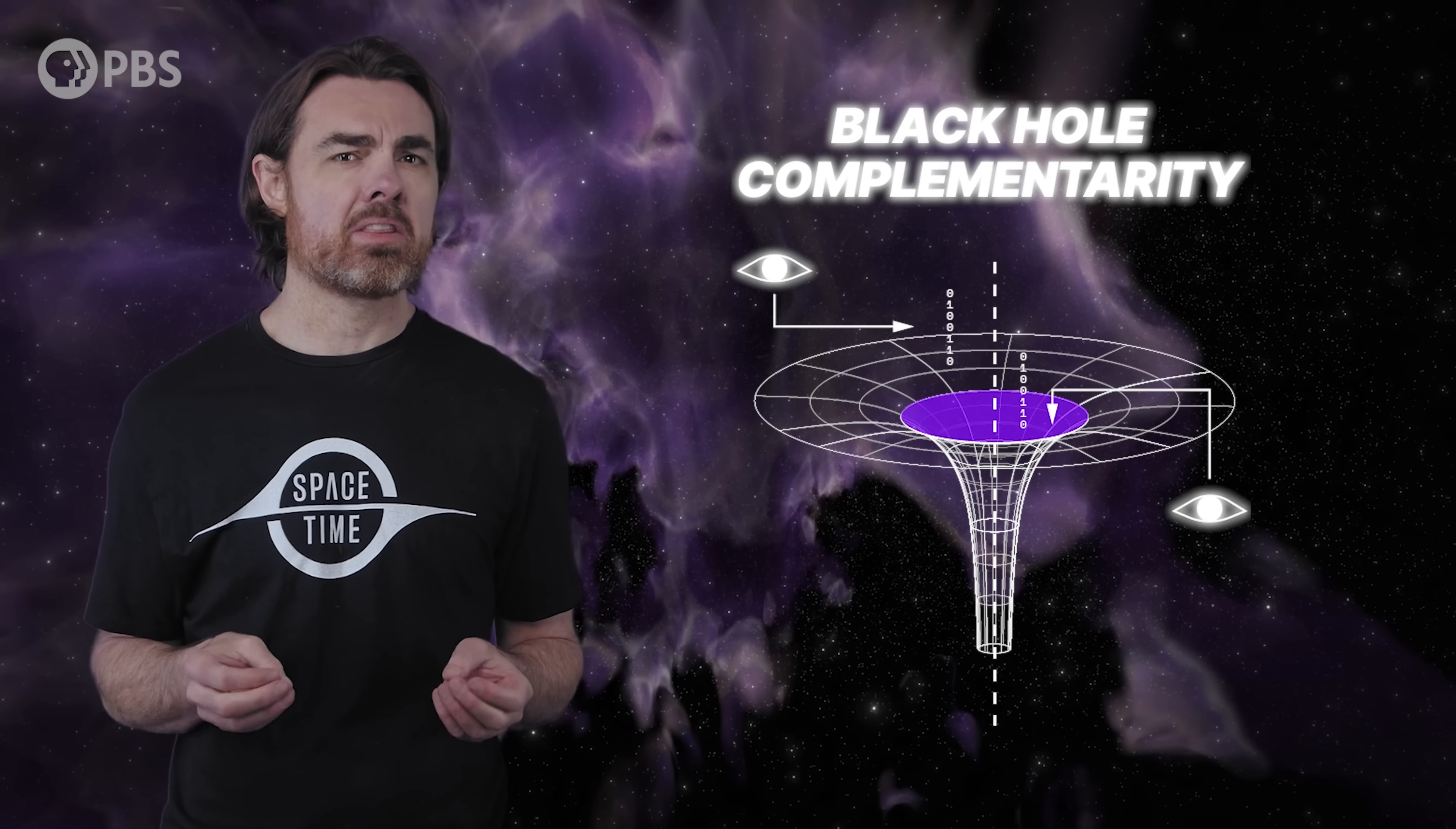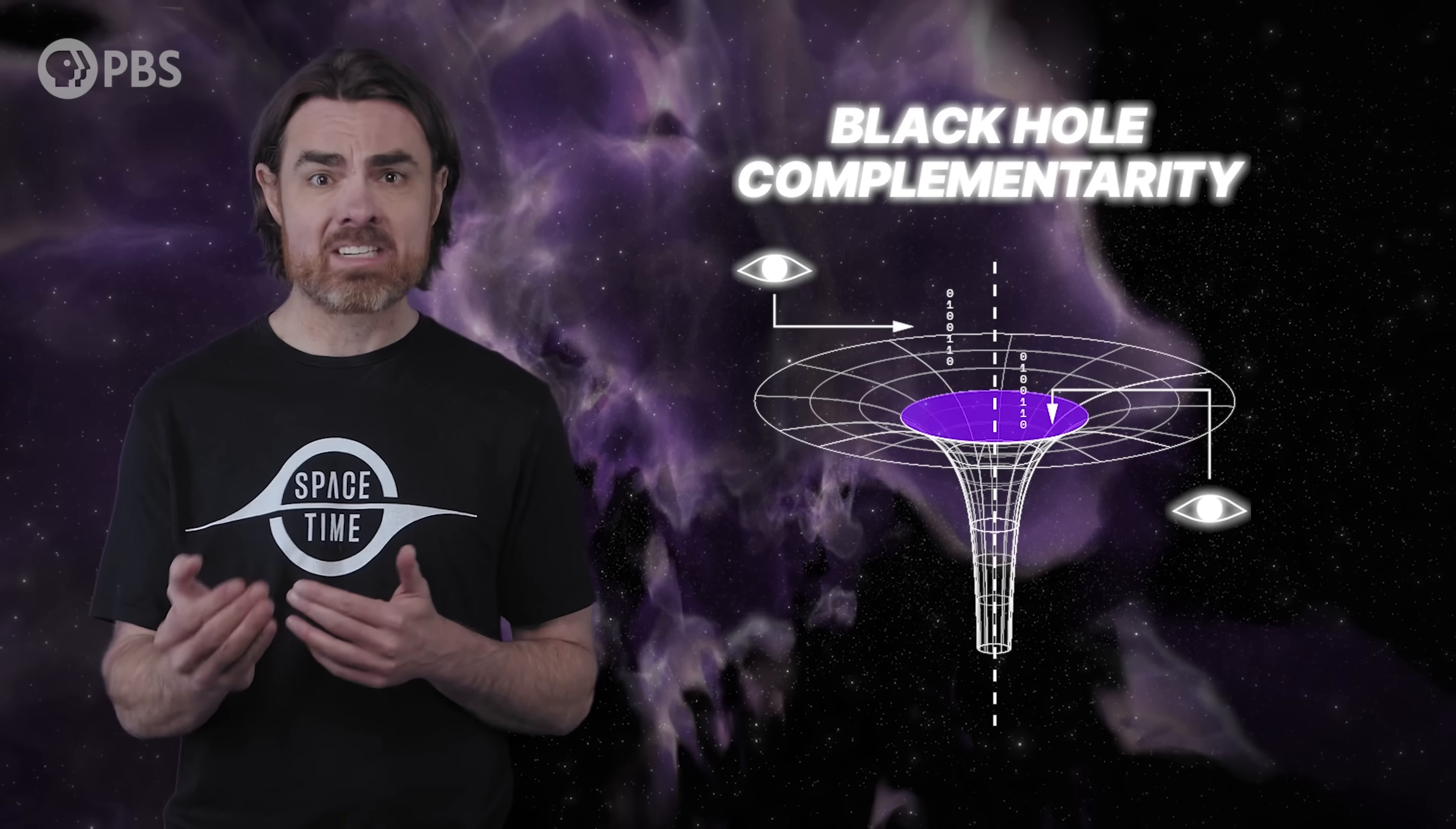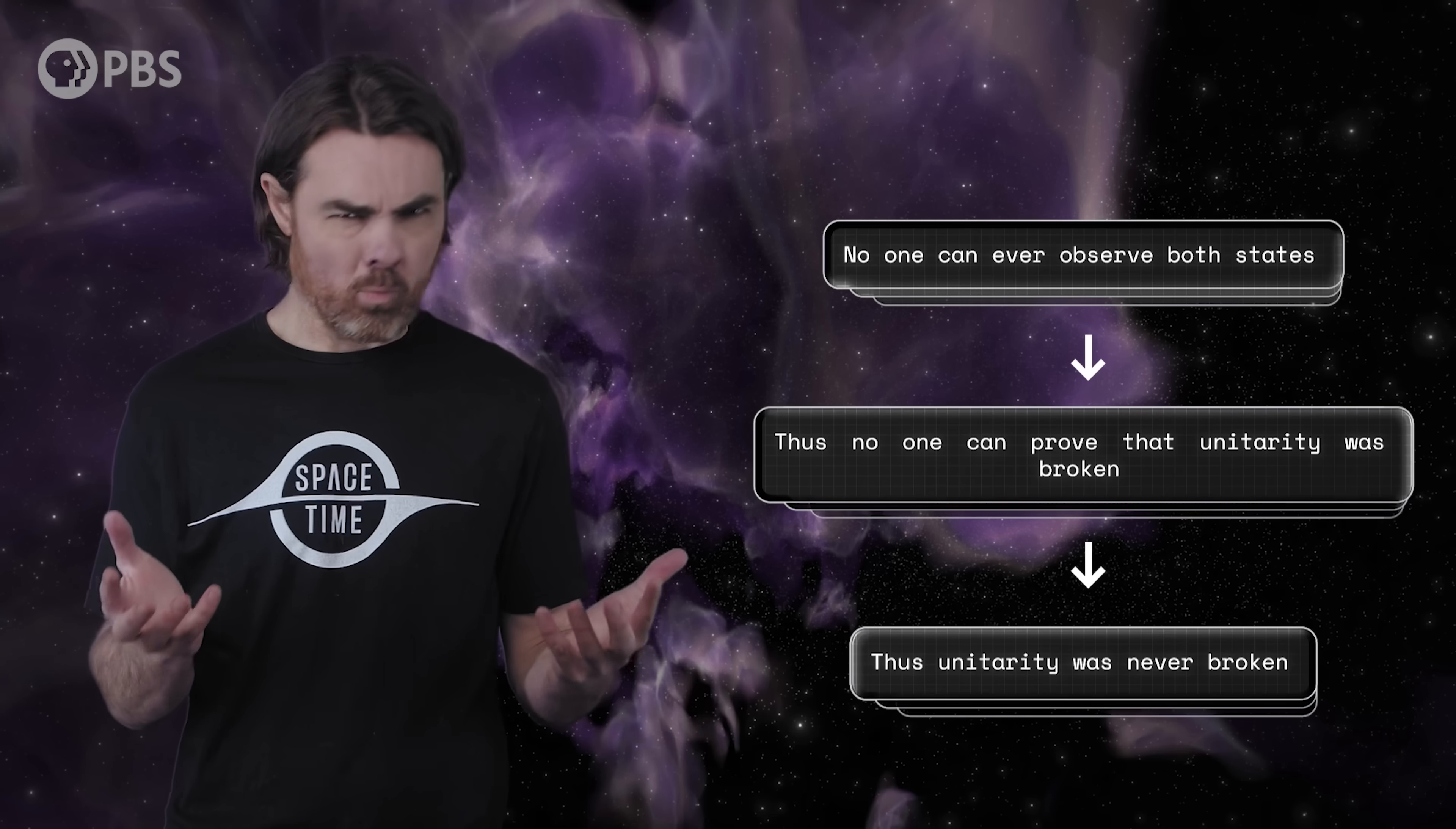Black hole complementarity states that there actually is no contradiction. It proposes that it's fine for the same quantum information to be inside the black hole as measured by one observer and frozen on the surface or radiated away in Hawking radiation according to another. And according to BHC, this is fine because no one can ever observe both states, so no one can prove that unitarity was broken.